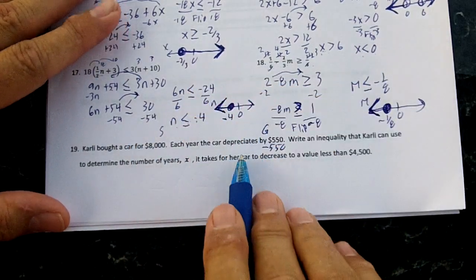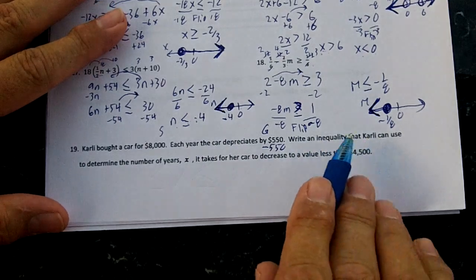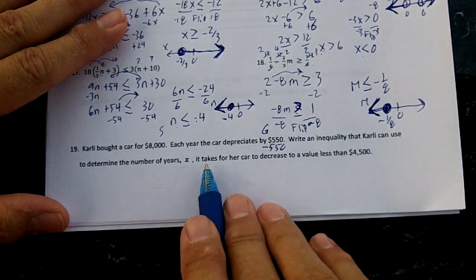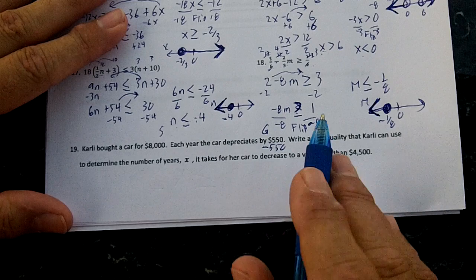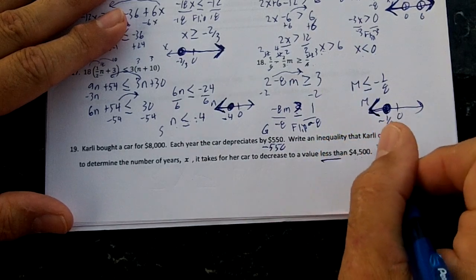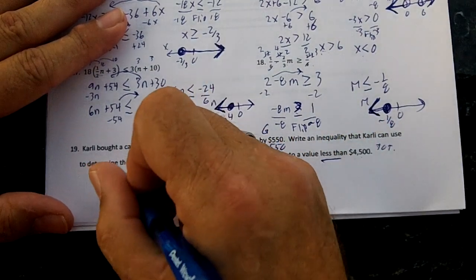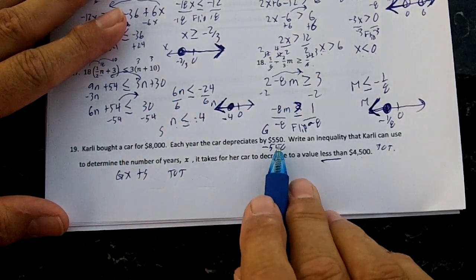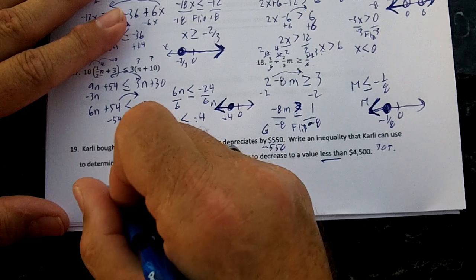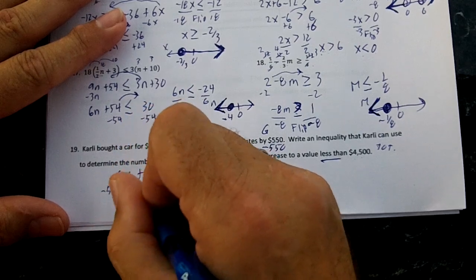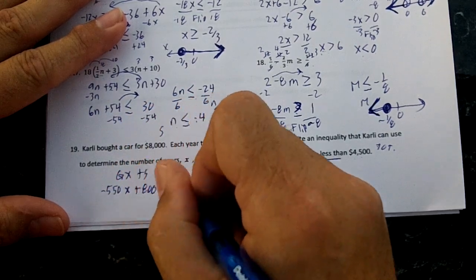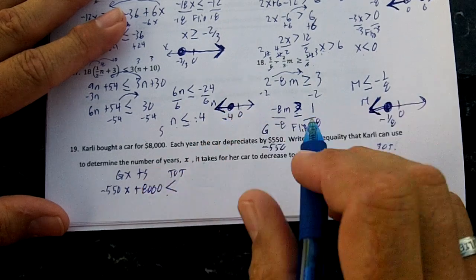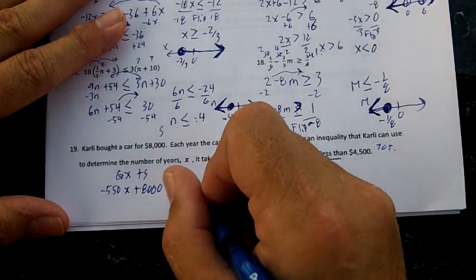This will be our starting number. Write an inequality that Carly could use to determine the number of years X it takes for her car to decrease to a value less than $4,500. This will be our total. So we're going to do GX plus S for our total. So our GX plus S will be negative $550X plus $8,000, and we want this to be less than $4,500, no equal bar.